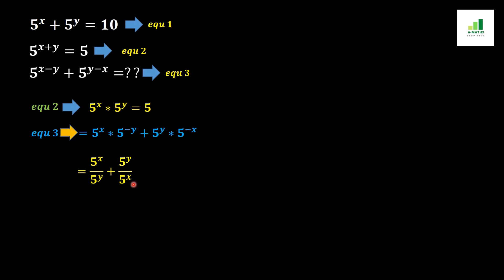We simplify this expression by taking the LCM. The result is (5^(2x) plus 5^(2y)) all over (5^x · 5^y), because 5^x times 5^x gives 5^(2x), and 5^y times 5^y gives 5^(2y), with 5^x · 5^y remaining in the denominator.